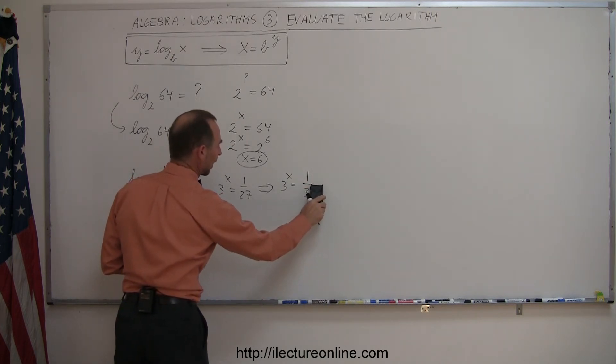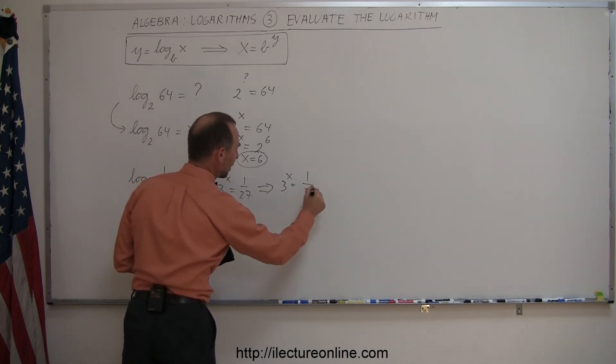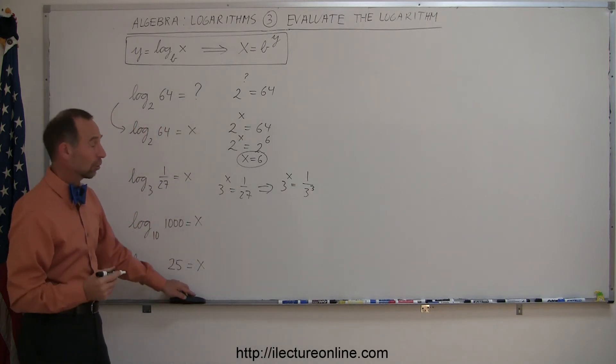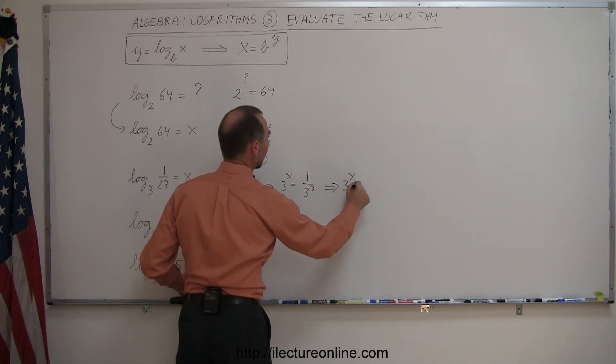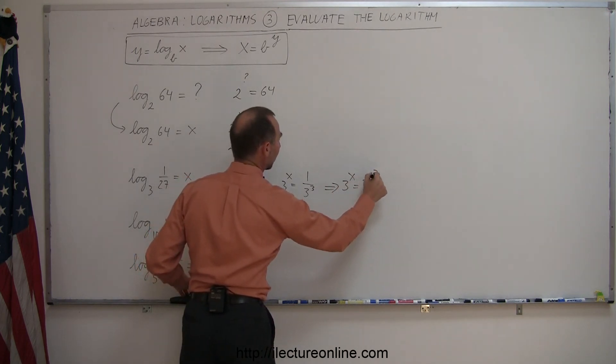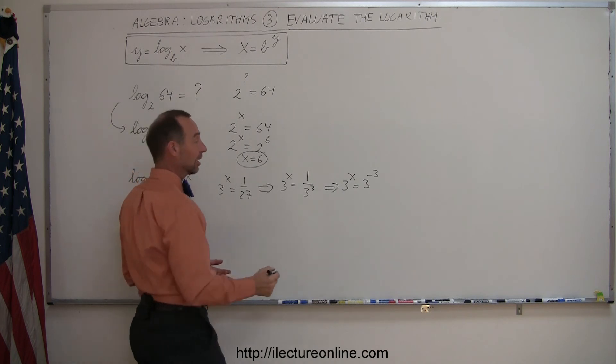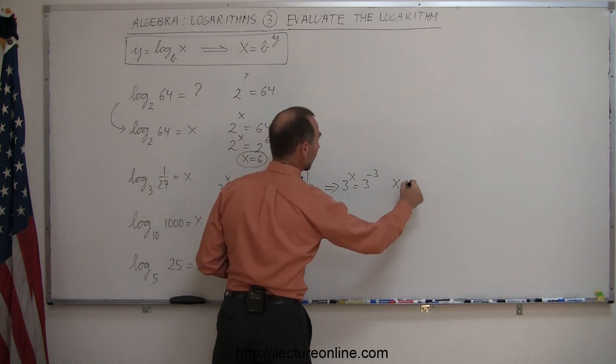Oops, I was going to write x but I really meant to write 3. And of course 1 over 3 to the third power is the same as writing 3 to the minus 3 power. So we can write this as 3 to the x is equal to 3 to the minus 3 power. And then you can clearly see that x is indeed equal to minus 3.